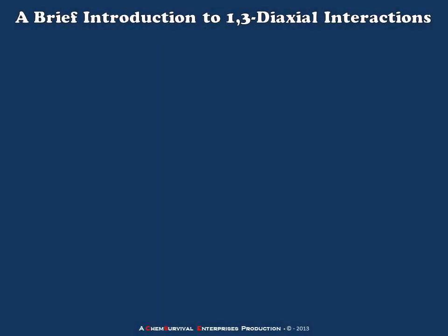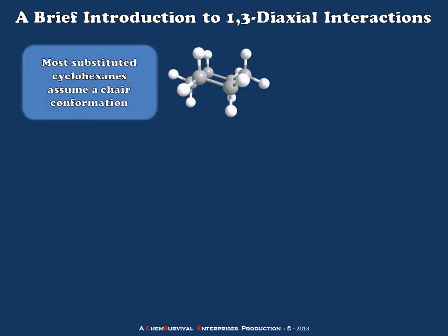Hey everyone, Professor Davis again. This time we're going to talk a little bit about the 1,3-diaxial interactions in cyclohexane molecules. Let's start by taking a quick look at cyclohexane in the chair conformation. Remember that in the chair conformation, cyclohexane ring atoms have a 109.5 degree bond angle and perfect staggered orientations to one another.